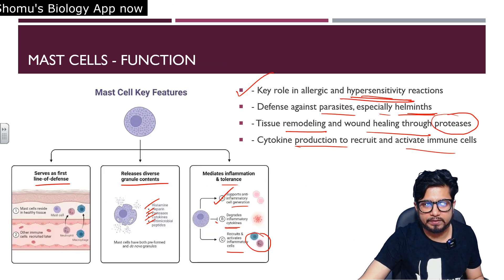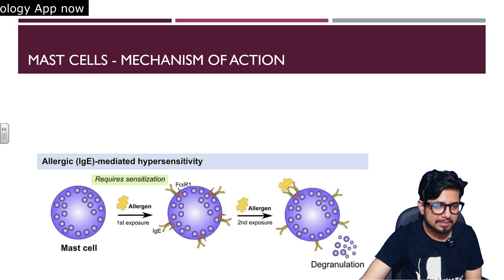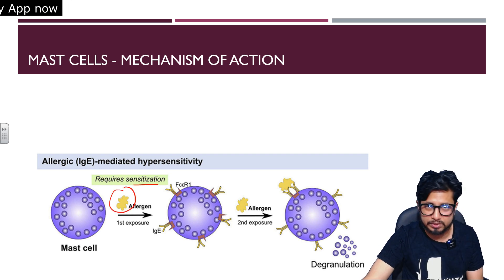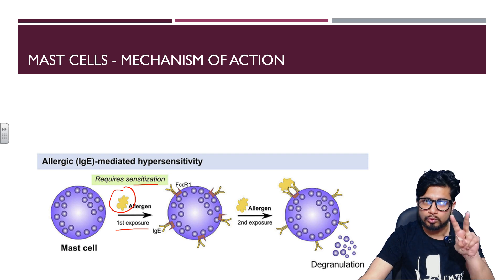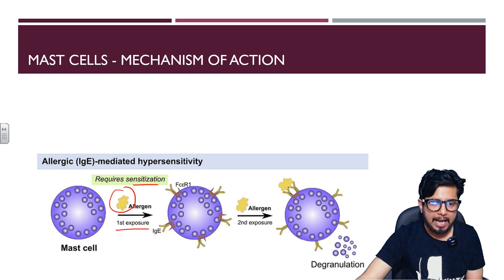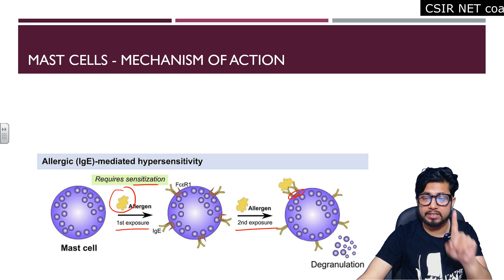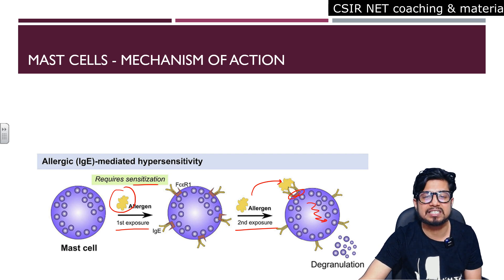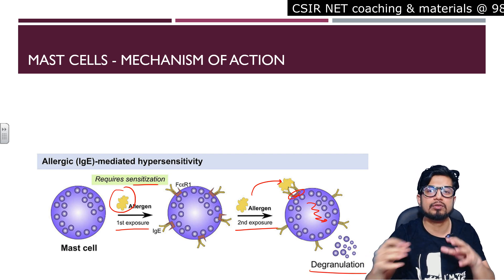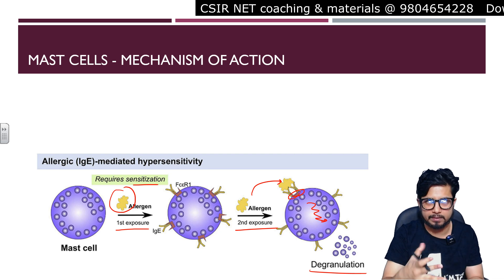The primary mechanism of action for mast cells is IgE-mediated type 1 hypersensitivity. Upon first allergen exposure, IgE is produced and binds to IgE receptors on the mast cell surface — one receptor interacts with two IgE Fc regions. On second allergen exposure, the allergen binds, triggering signaling via CD63, leading to degranulation and release of granules, heparin, and histamine outside the cell.